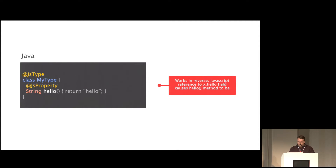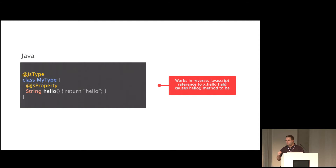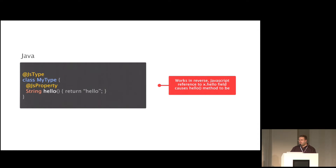It also works in reverse. You might have an implementation of a JS type where you have an @JSProperty on a method — this is where it gets really magical. You've declared a Java class with a method on it, but when a JavaScript programmer sees this object passed into a JavaScript library, it actually shows up as a field. Someone would say x.hello without parentheses to invoke it, but it actually does invoke the method and returns 'hello'. So we're mapping a field to a method call, which lets the JavaScript API look very idiomatic to a JavaScript programmer.